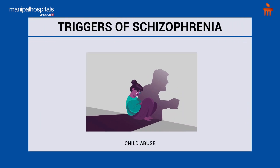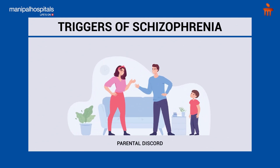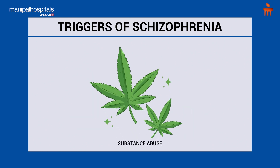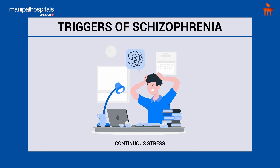There are various risk factors that can trigger Schizophrenia. First is child abuse or child neglect. Second is parental discord, or parents going through continuous interpersonal issues, which can affect the child and can lead to development of Schizophrenia. Third is substance abuse — early usage of cannabis, that is marijuana, is associated with development of Schizophrenia. Fourth, continuous stress, anxiety, and depression can lead to development of Schizophrenia and its symptoms.